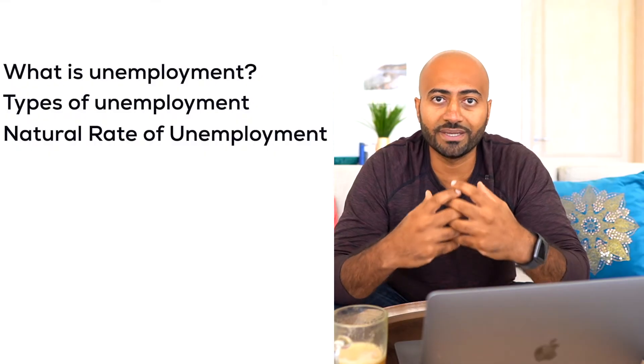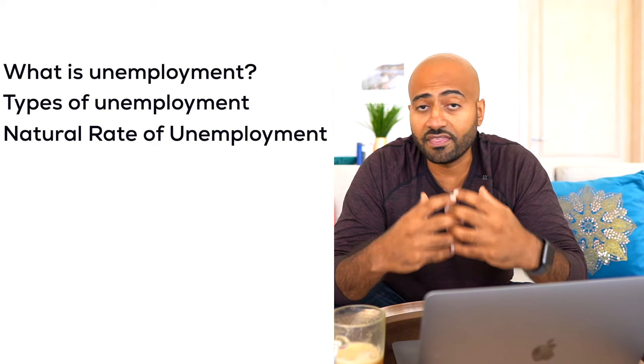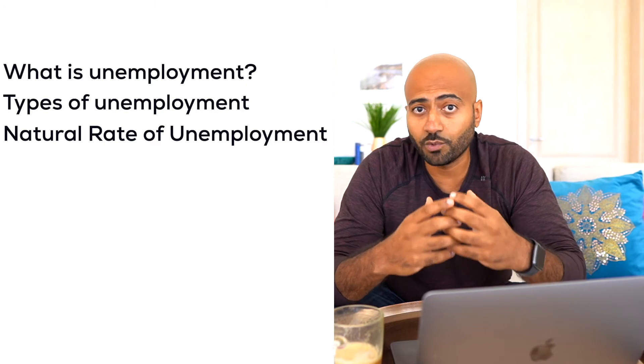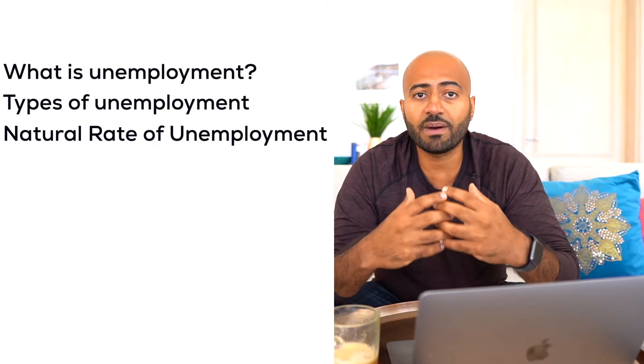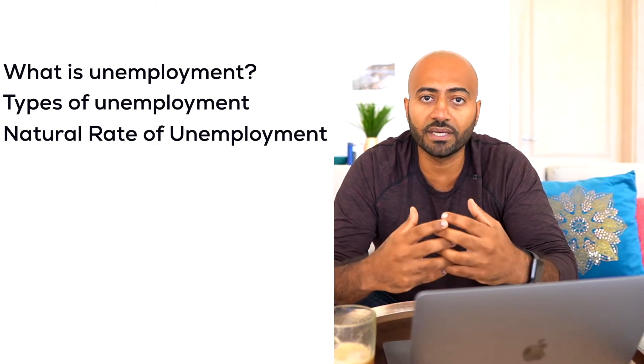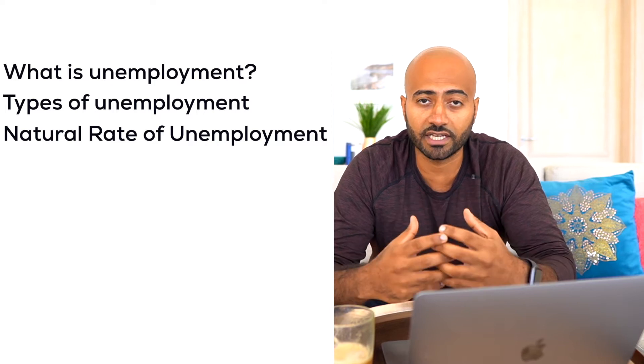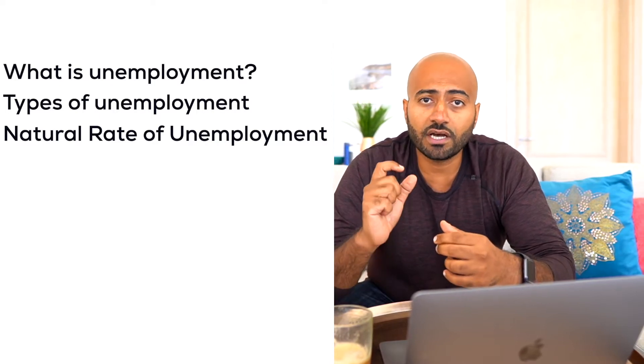To get a better idea of what unemployment is, or what target unemployment rate we need in the economy, we first have to describe or explain what unemployment is. And then after we explain what unemployment is, I will talk about three types of unemployment that occur in the economy to allow us to understand what a natural unemployment rate is.